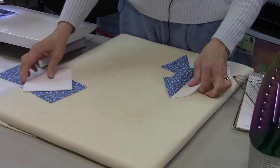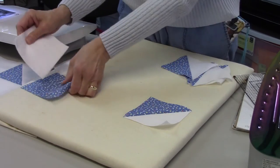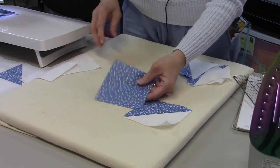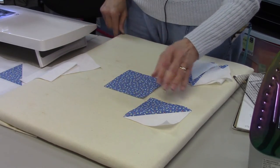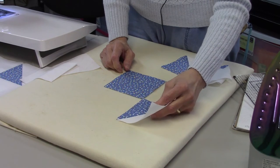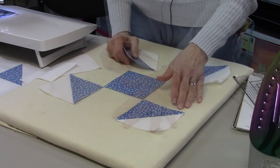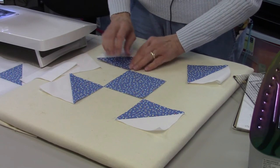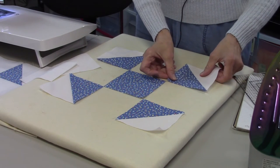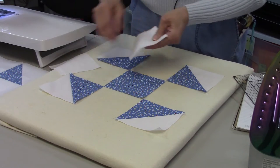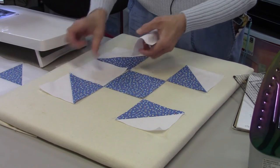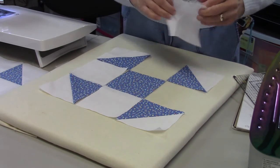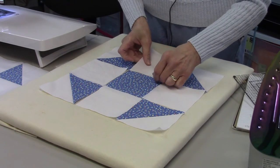Now all I need to do is lay out the block. I want to start with the four and a half inch square, and that's going to go in the center. Then the half-square triangles are just going to face that block. Your focus fabric is going to face the center piece. And then you're just going to fill in the other squares with your background four and a half inch squares. So here's your block right there.